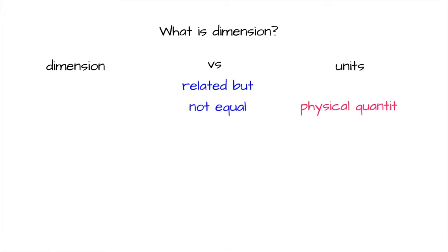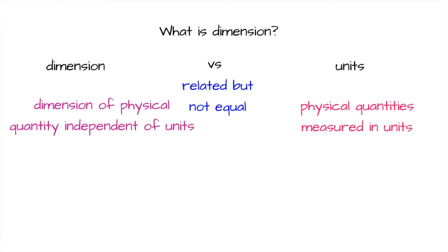Before we talk about dimensional analysis, we need to know what dimension is. Dimension and unit are related but different concepts. Physical quantities are measured in units. The dimension of a physical quantity is independent of the particular unit chosen. For example, both gram and kilogram are units of mass, and mass is what we call the dimension.